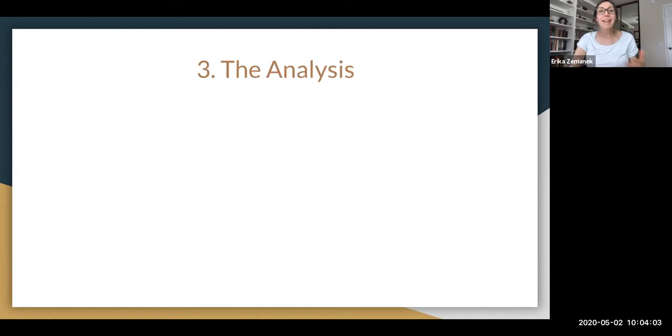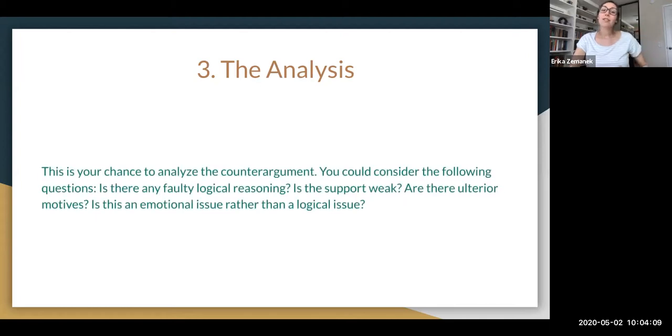Now in step three, this is where you get to start tearing apart the counterargument, the analysis. So this is your chance to analyze the counterargument. Would you consider the following, or you could consider the following questions? Is there faulty logical reasoning? Is there support weak? Is there an alternative motives. Is there an emotional issue versus logical issue?